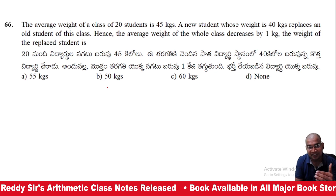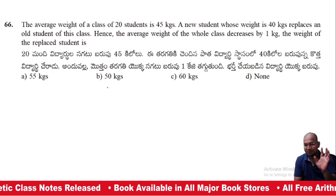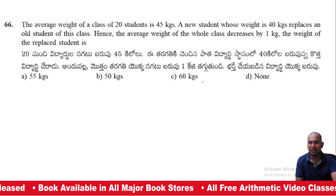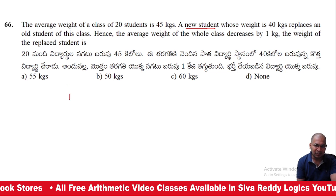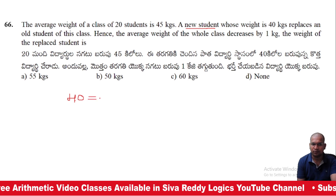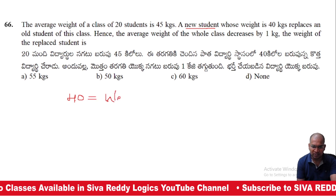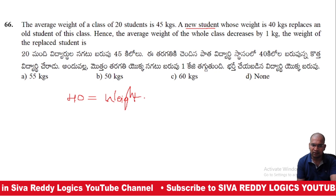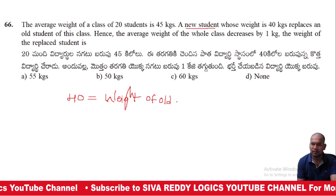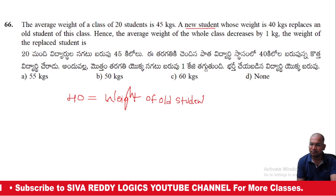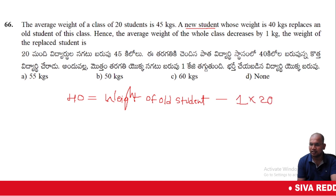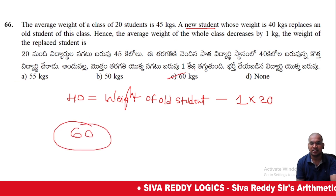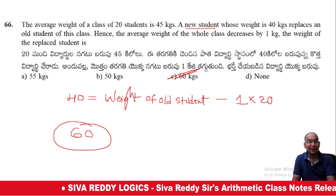Let's start with the question. We are given the new student's weight and need to find the old student's weight. New student weight is 40 kg, which equals the weight of the old student minus (decrease × number of students). So: 40 = old student weight − (1 × 20), giving weight of old student equal to 60 kg.